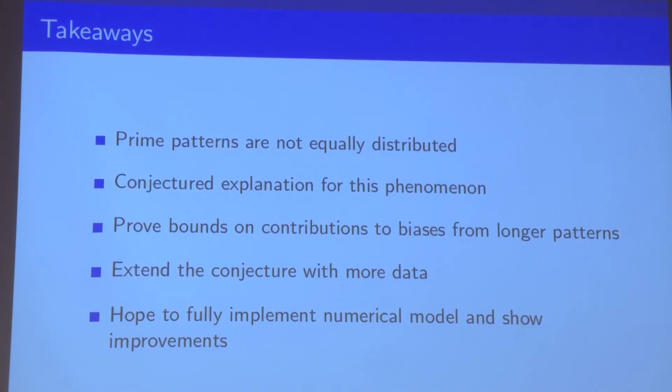So the takeaways: prime patterns are not necessarily equally distributed, and there are conjectured explanations for why this weird behavior occurs. What we did was we specifically placed the conjecture that Lemke, Oliver, and Soundara made on firmer footing. And then we extended our numerical results to find a possible lower order term of the conjecture that they omitted.